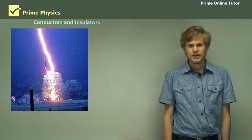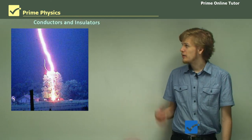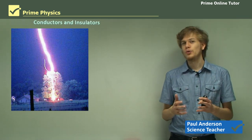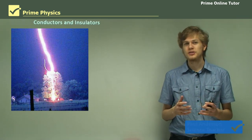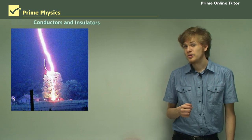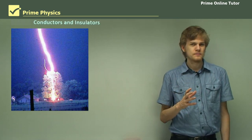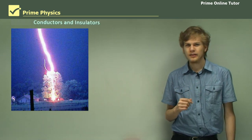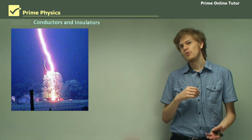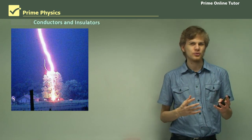Hi everyone. Today we're going to be talking about conductors and insulators. These are materials which allow the flow of electricity and do not allow the flow of electricity respectively. It turns out that not all conductors are metals, so we'll be looking at some of the more interesting sorts of conductors.